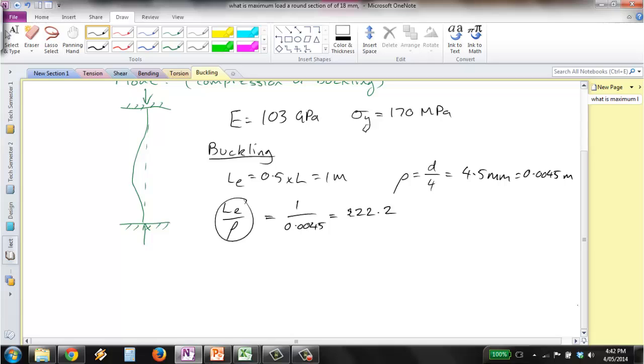We now need to determine the Euler-Johnson tangent point so we know which buckling equation to use. The slenderness ratio of that point is given by the following equation from the first video, to the power of one half.